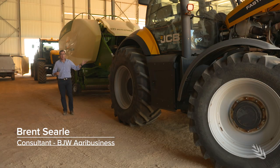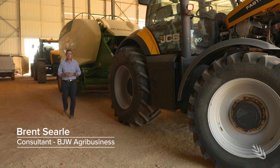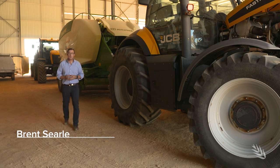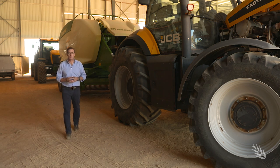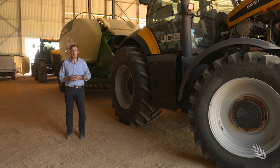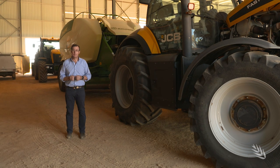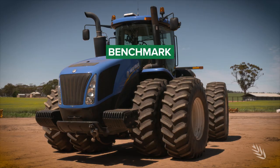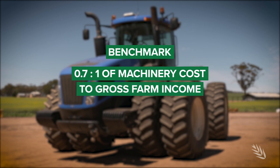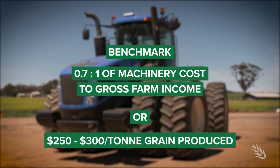If you're buying machinery, a good way to look at the investment is to benchmark your machinery cost against your gross farm income. Typically, the benchmark is a ratio of 0.7 to 1 of machinery cost to gross farm income, or 250 to 300 dollars per tonne of grain produced.